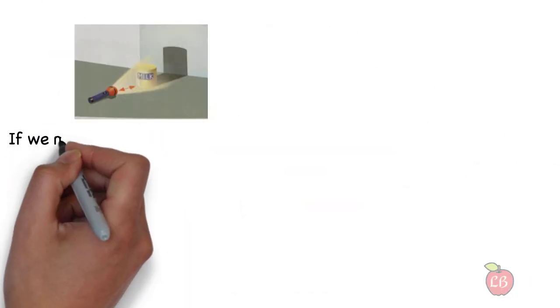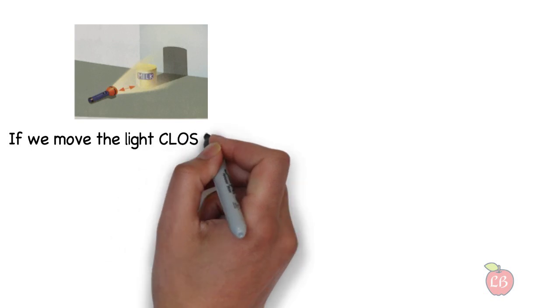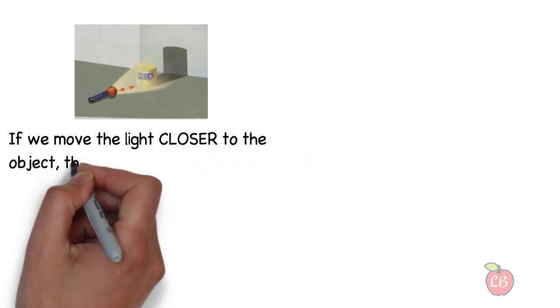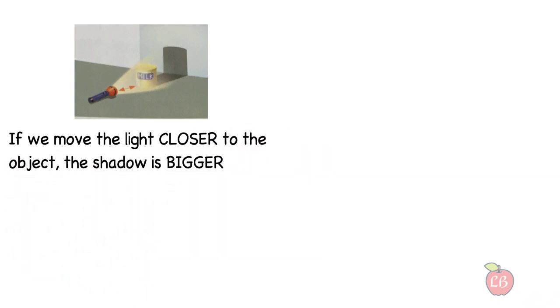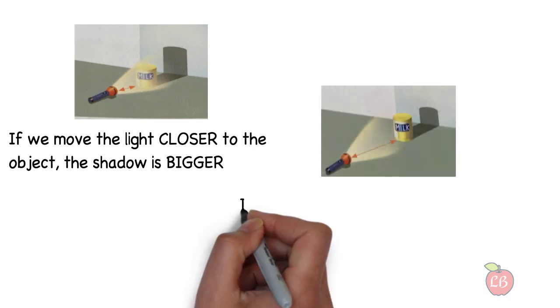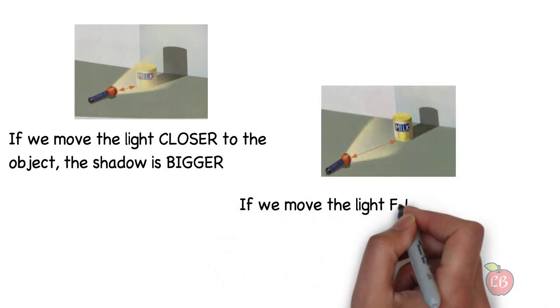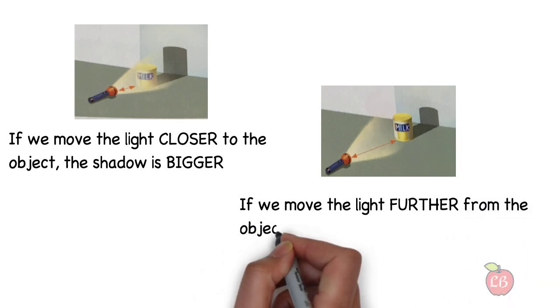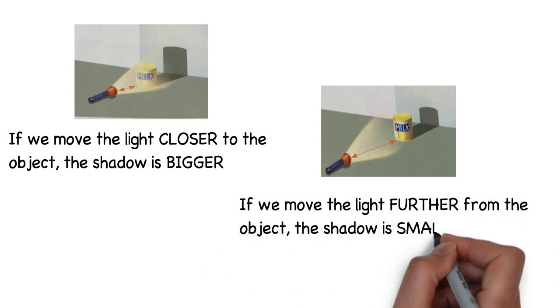Let's have an example. If we move the light closer to the object, the shadow is bigger. Can you see it? But if we move the light further from the object, then the shadow is smaller.